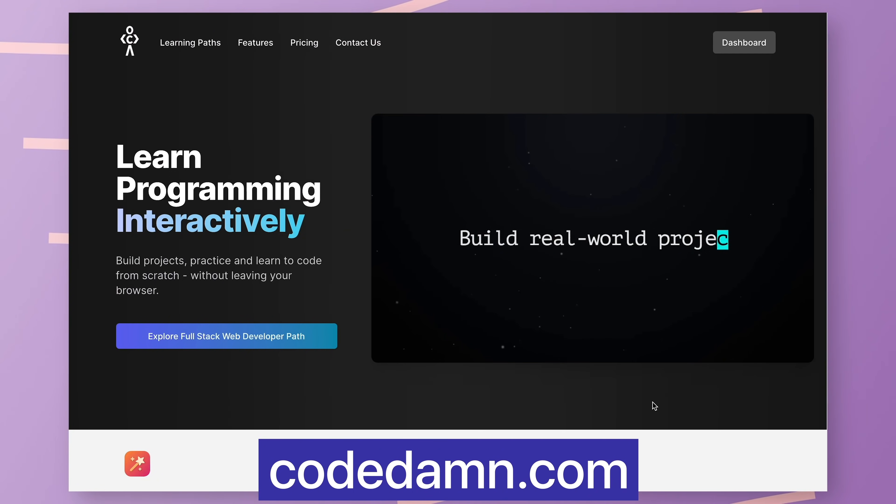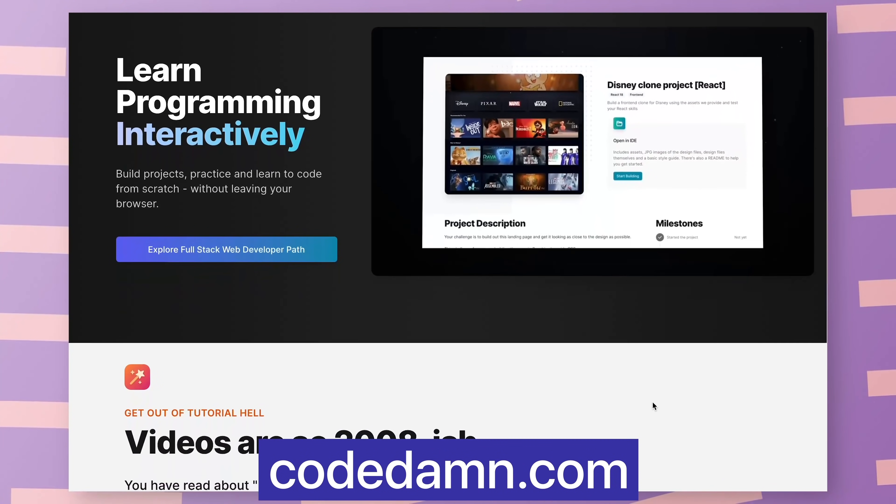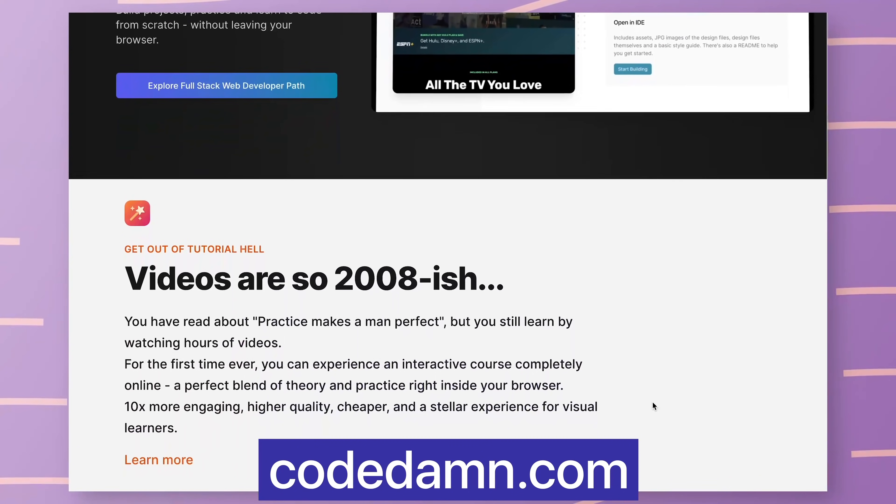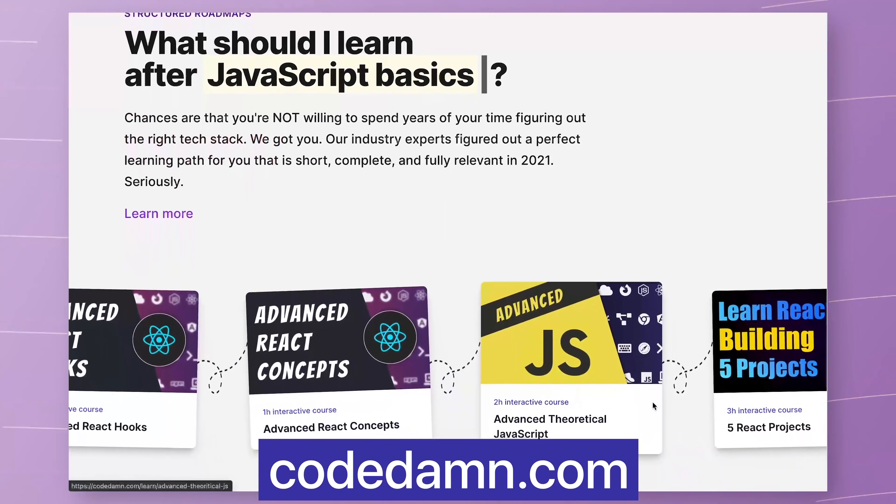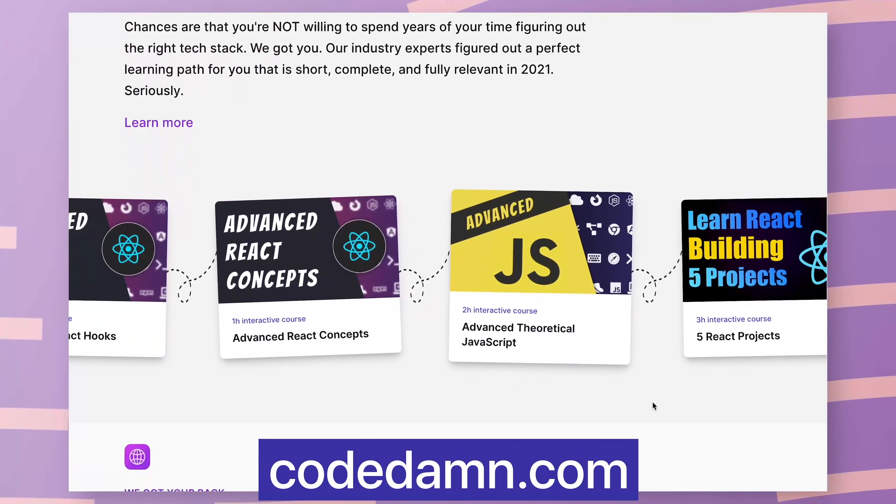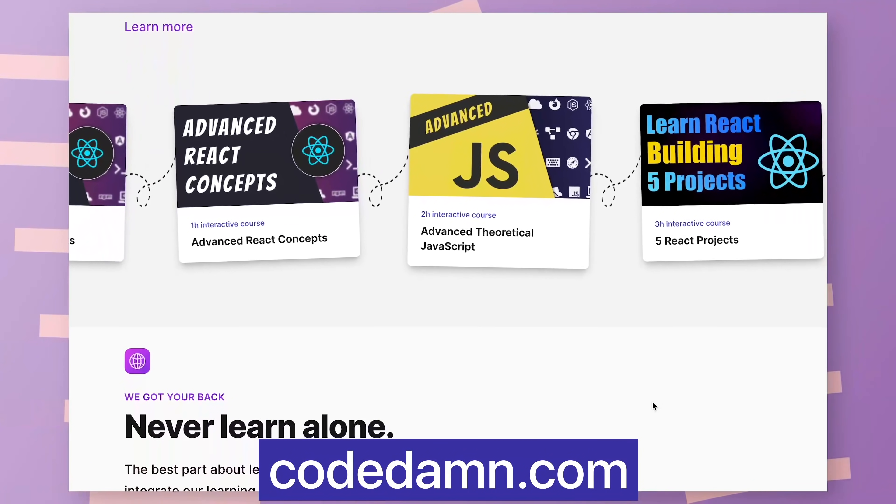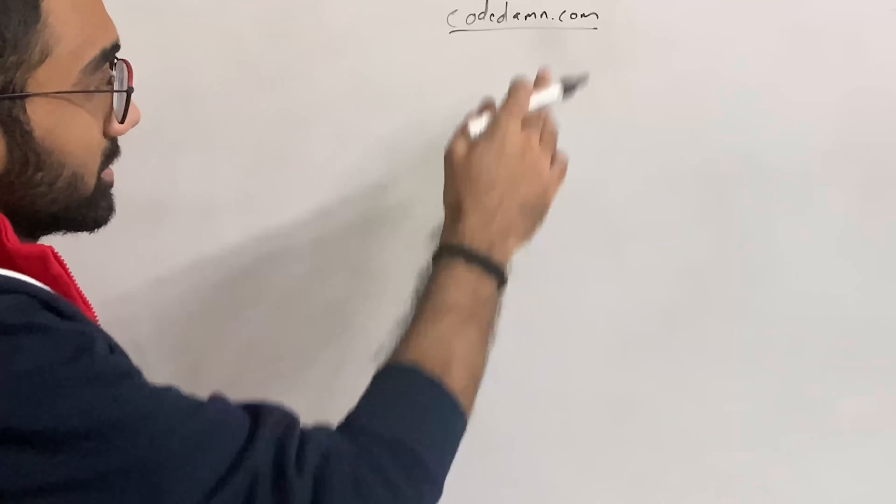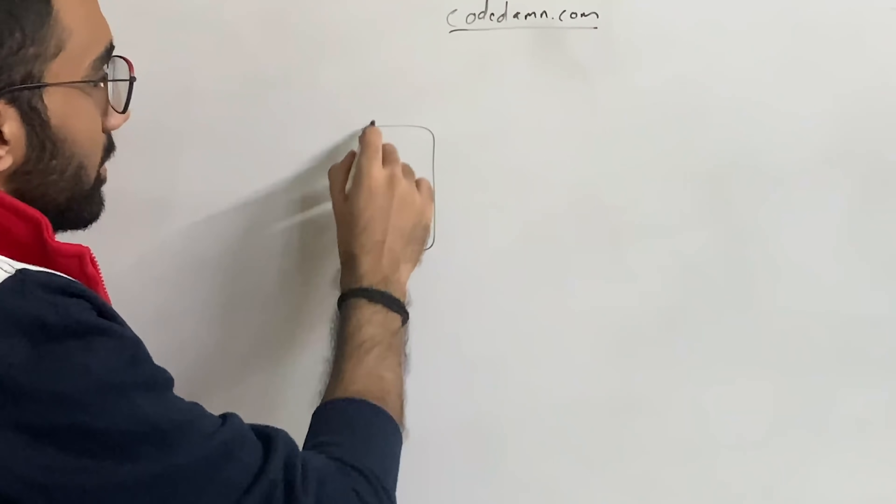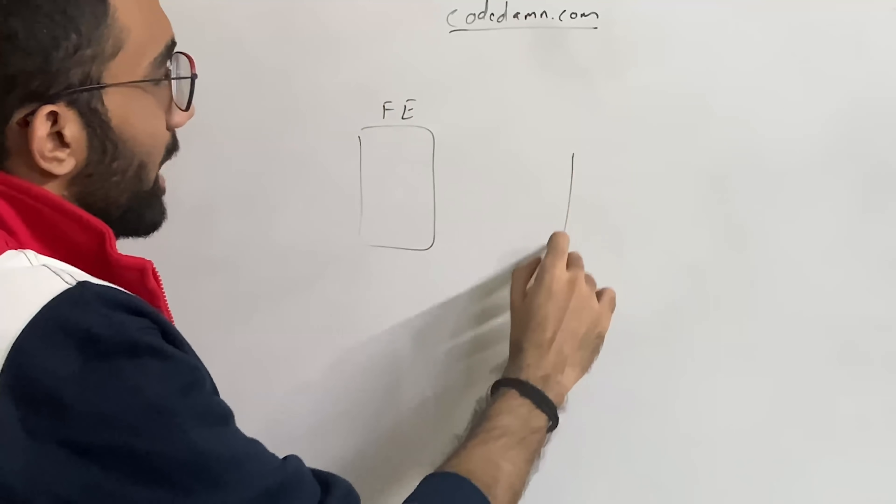So this is the architecture we also use on codedum.com, which is an amazing site to become a full stack developer. This is the exact same architecture which we use in a production website you can see on codedum.com. The what of this architecture is that we separate our front end and back end.